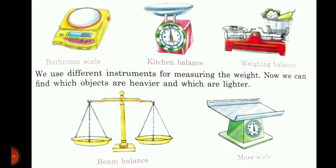Now look at these instruments for measuring weight. One is a bathroom scale, another is a kitchen balance, and another is a weighing balance. These are the different instruments for measuring weight. We can find out which objects are heavier and which are lighter with the help of these instruments. The second picture shows a beam balance and another one is a mass scale.